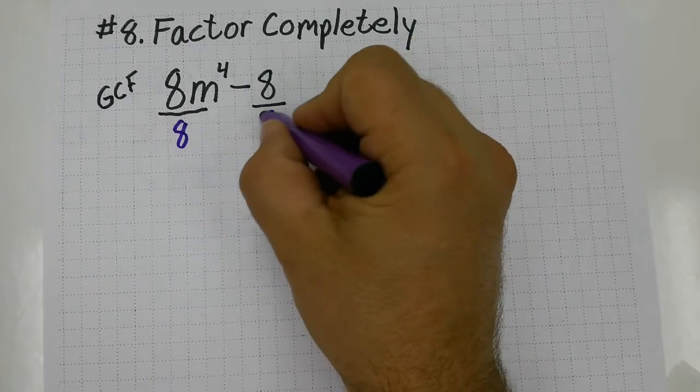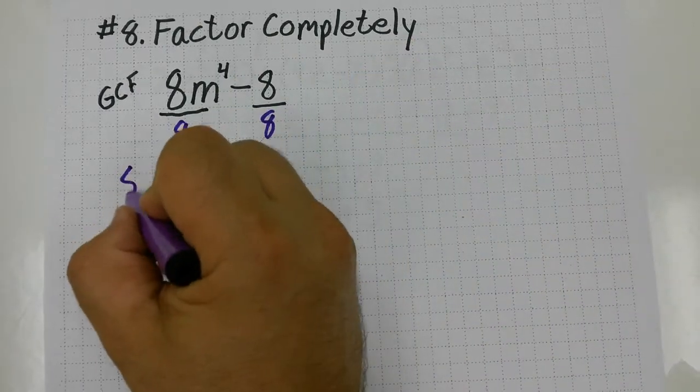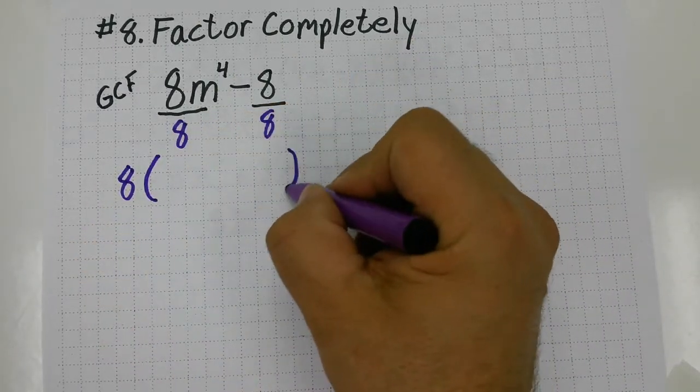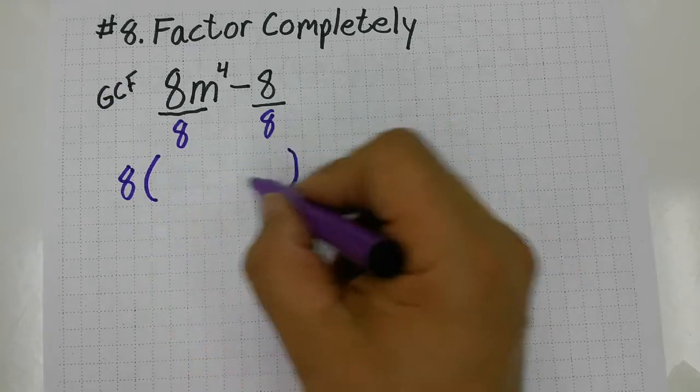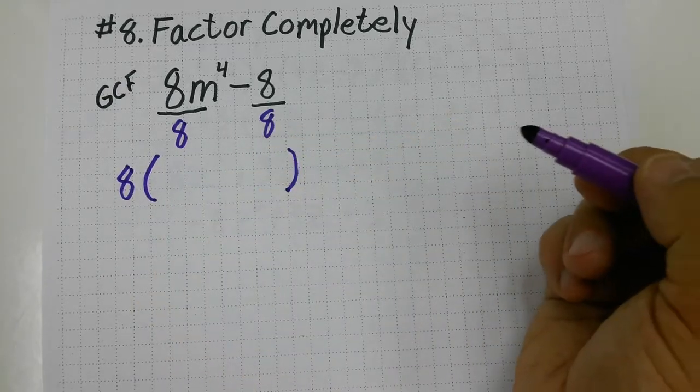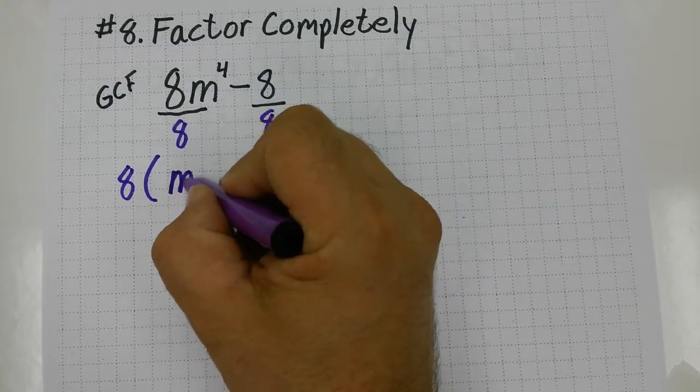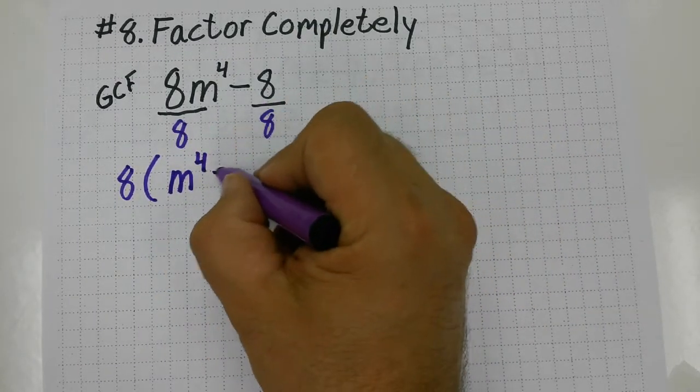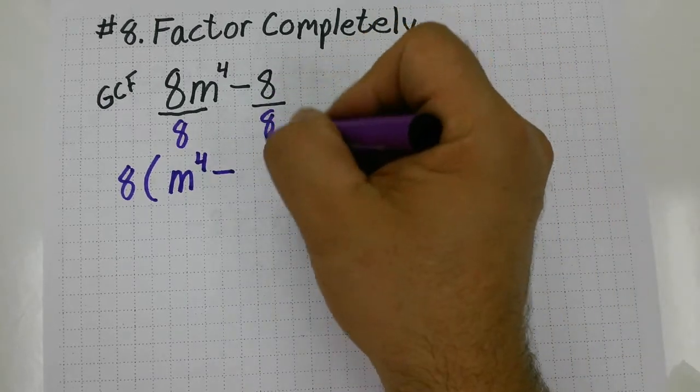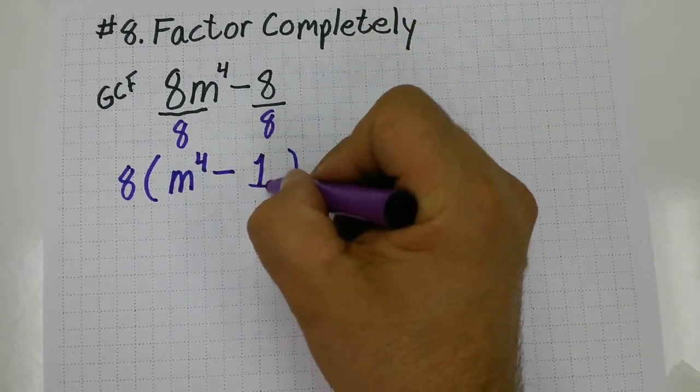The GCF, I'm going to put an 8 out in front of a quantity, and this will tell me what the binomial will be left over inside. So 8m to the fourth divided by 8, that just gives me m to the fourth. The minus sign falls down, and 8 divided by 8, that gives me a plain old one.